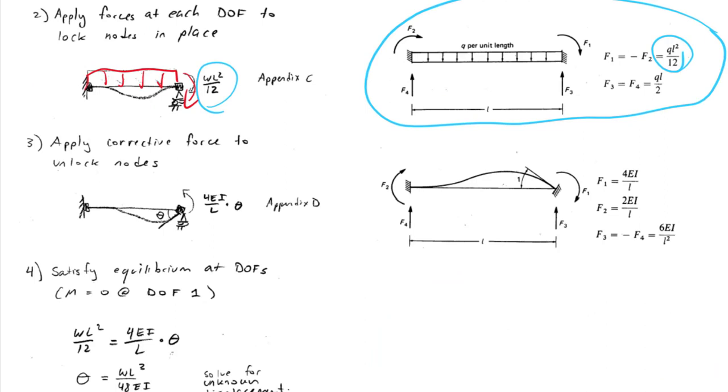Now that node is actually allowed to rotate. In fact, it has zero moment at it. It's a moment-free node. So that moment of WL squared over 12 is clearly an error. And what we need to do is apply a moment in the opposite direction that will be scaled appropriately to cancel out that error.